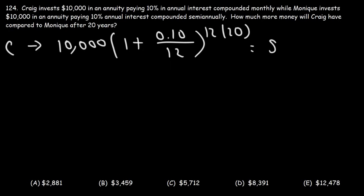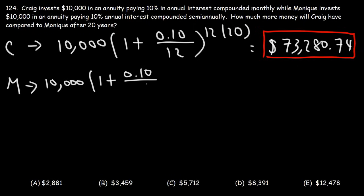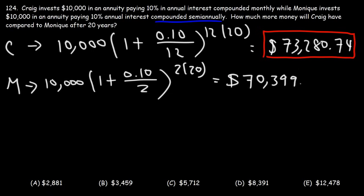After 20 years, Craig is going to have $73,280.74. Now let's compare that with Monique. She's going to invest the same principal and receive the same interest rate. However, her account is compounded semi-annually — semi means two, so that's twice in a year, meaning N is 2. So Monique will have $70,399.89.